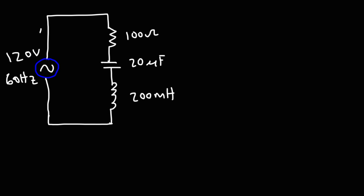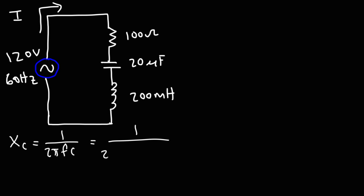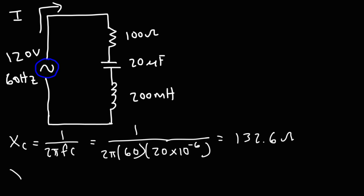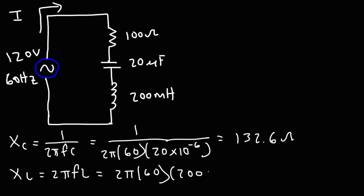This is a 120 volt signal at a frequency of 60 hertz. Go ahead and calculate the current flowing in this circuit. First, we need to calculate the capacitive reactance: 1 over 2πfC, which is 1 over 2π times 60 hertz times 20 microfarads (20 times 10 to the minus 6 farads), giving 132.6 ohms. Next, the inductive reactance is 2πfL: 2π times 60 times 200 millihenries (200 times 10 to the minus 3 henries), giving 75.4 ohms.